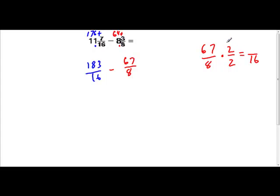67 times 2. Let's try that out. 67 times 2. 2 times 7 is 14. 2 times 6 is 12, plus 1 is 13. So we have 134 over 16.